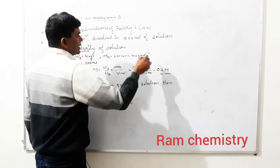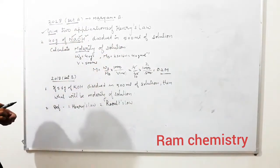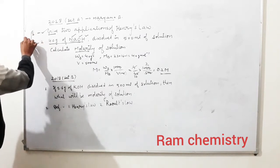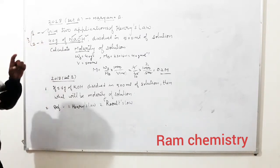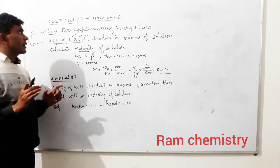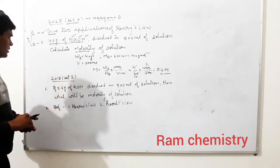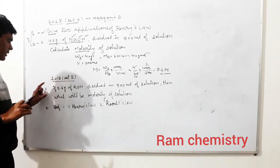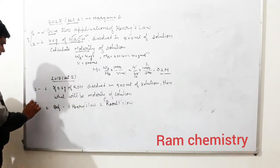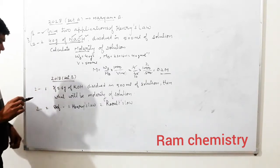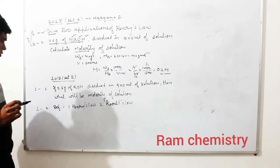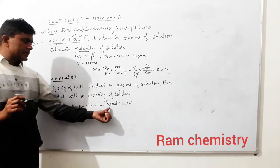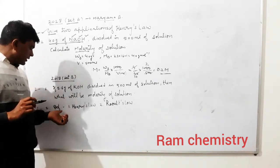Yeh haemari molarity nikal gayi — 0.2 M. Yeh 2 number ka question tha. Total 4 marks ka 2018 mein puchha gaya tha. Ab Set B ki taraf ham move karte hain. Set B mein bhi aisa hi 2 marks ka question tha. The second question in Set B is theory-based — Henrila aur Raoult's Law ko aapko statement deni hai.